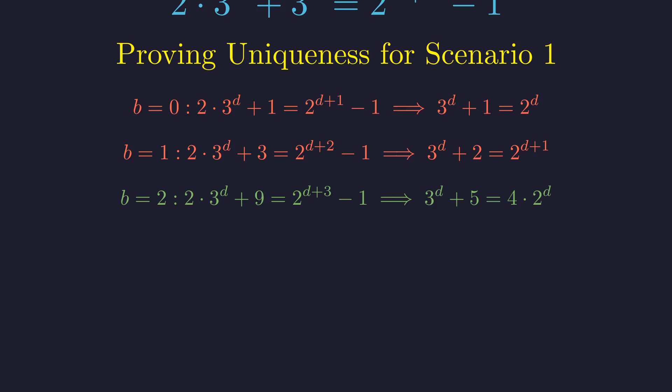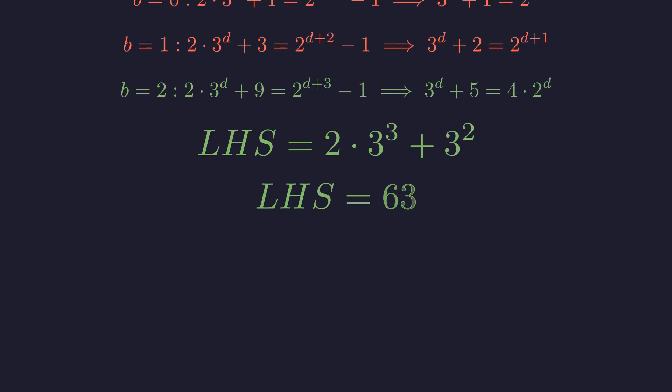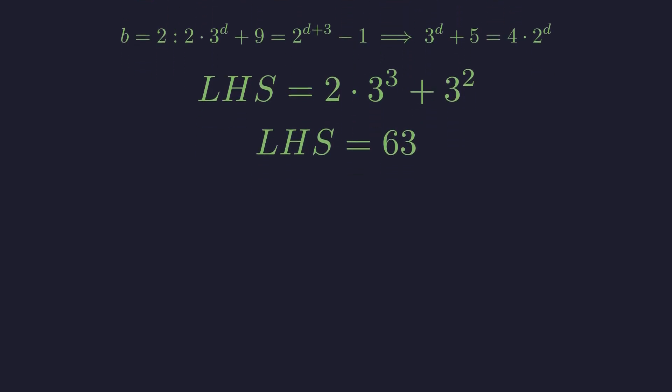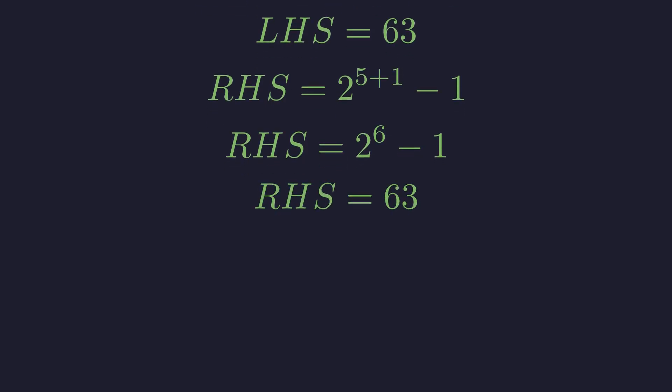This unique solution gives us n equals b plus d, which is 5. We verify this solution. For the left-hand side, we substitute b equals 2 and d equals 3, which sums to 63. Now for the right-hand side with n equals 5, the exponent becomes 6, and the right-hand side is also 63. The solution is confirmed.